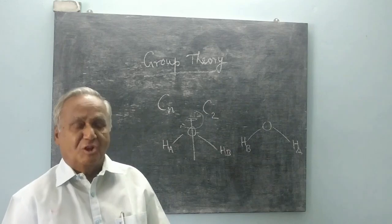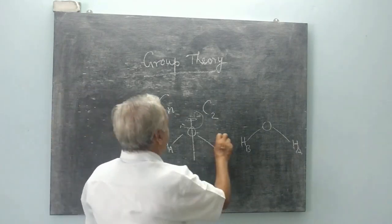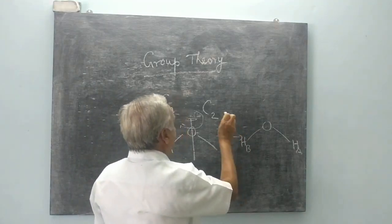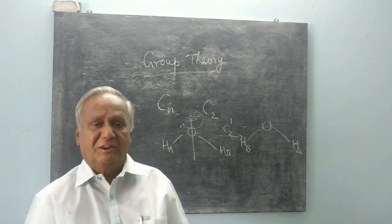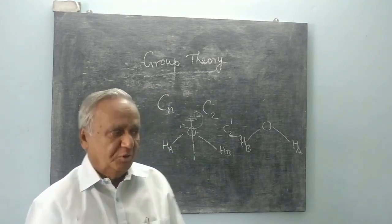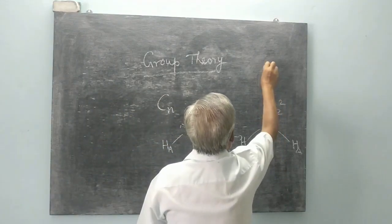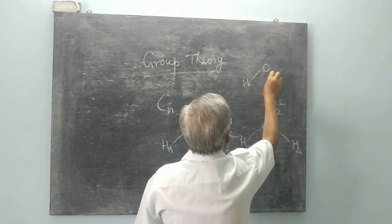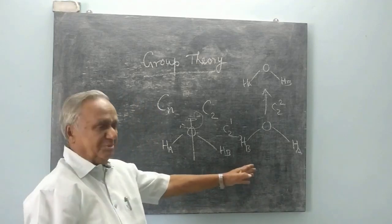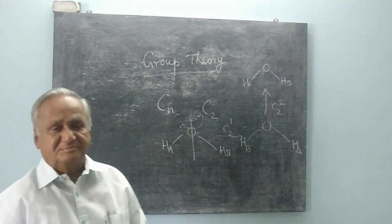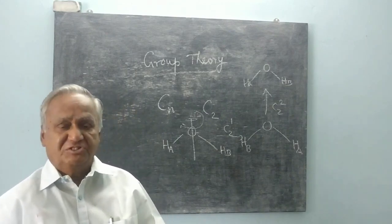Both the element and the operation are denoted as C2. I call this C2-1 — performing the rotation using the C2 axis once. If I do it again, I call it C2-2, and I get back the identical structure. The first gives an indistinguishable structure and the second gives an identical structure.